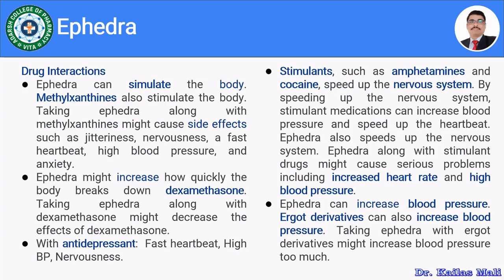Regarding drug interactions: ephedra stimulates the body, and methylxanthines also stimulate the body. Combining ephedra with methylxanthines can produce serious side effects including jitteriness, nervousness, fast heartbeat, high blood pressure, and anxiety. One should not combine ephedra with methylxanthines.